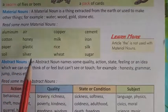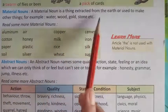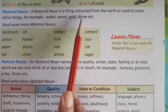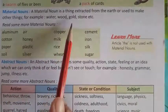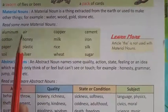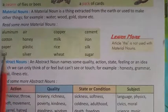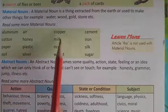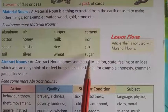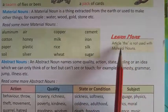Next, Material Noun — द्रव्यवाचक संज्ञा. A material noun is a thing extracted from the earth, or used to make other things. For example: water, wood, gold, stone, etc. Read some more material nouns: aluminium, air, copper, cement, cotton, paper, soil, honey, plastic, silver, milk, rice, wheat, iron, silk, sugar, etc. An article 'the' is not used with material noun — तो material noun में कभी भी 'the' article यूज़ नहीं किया जाता है.